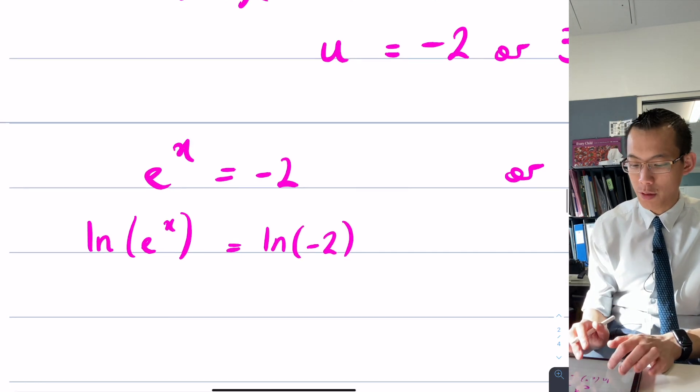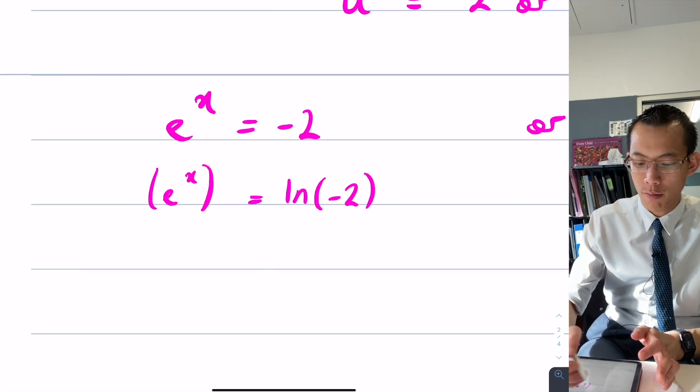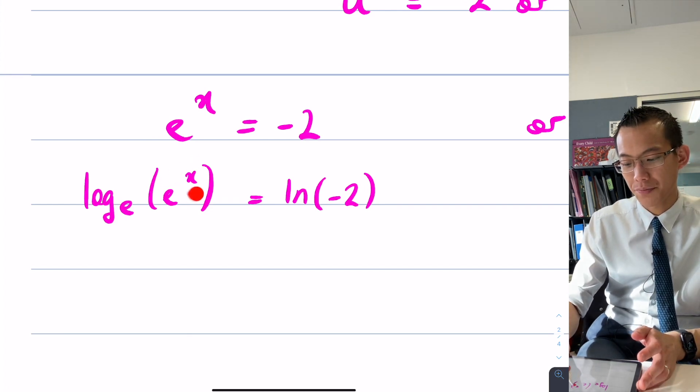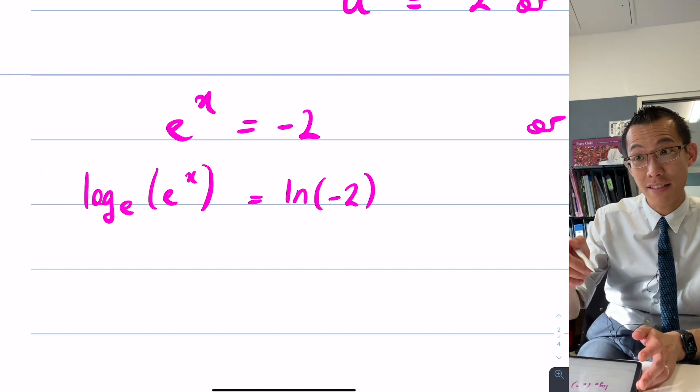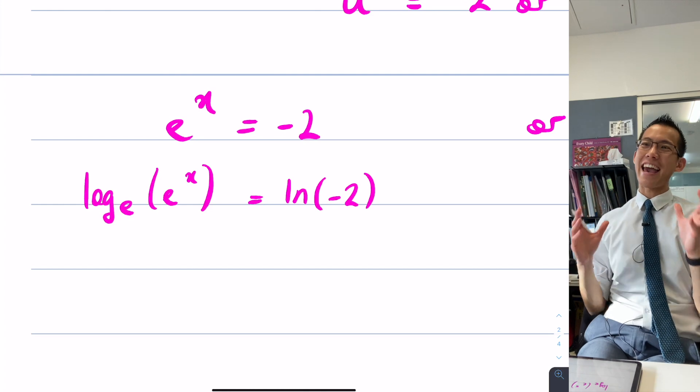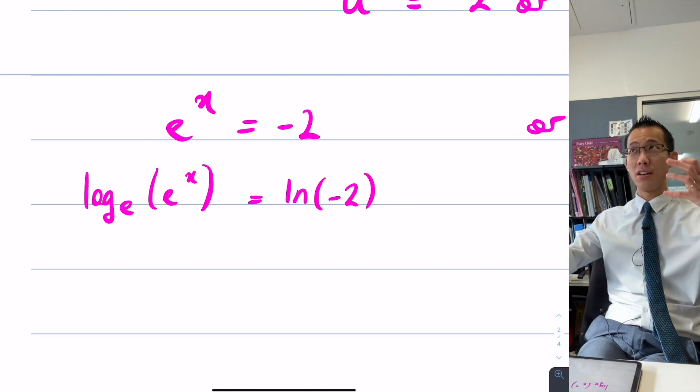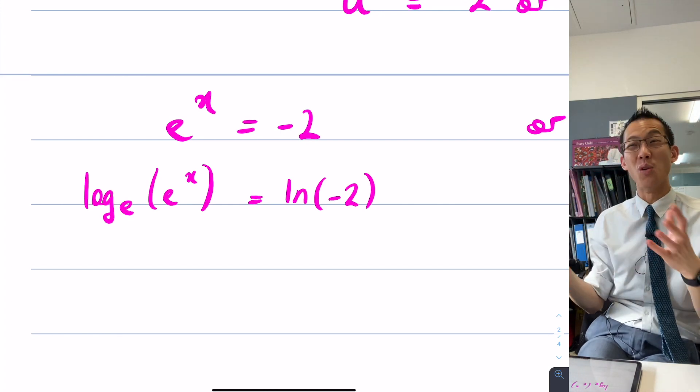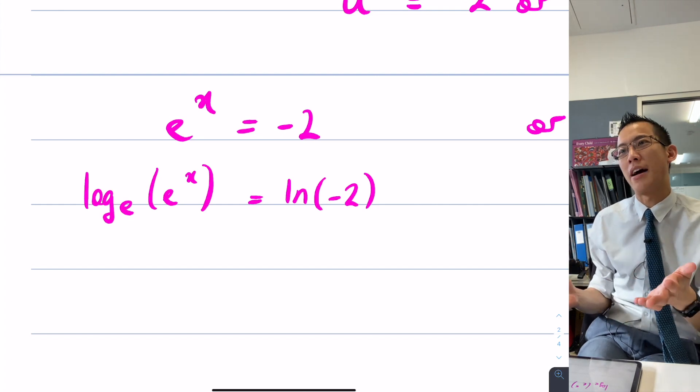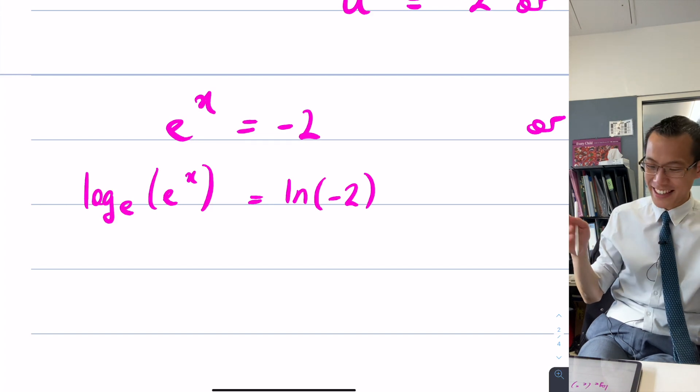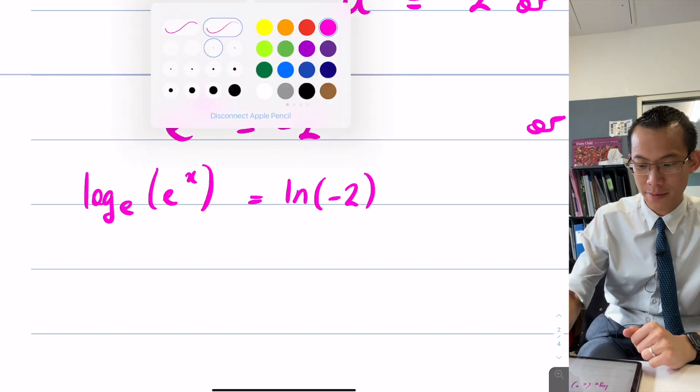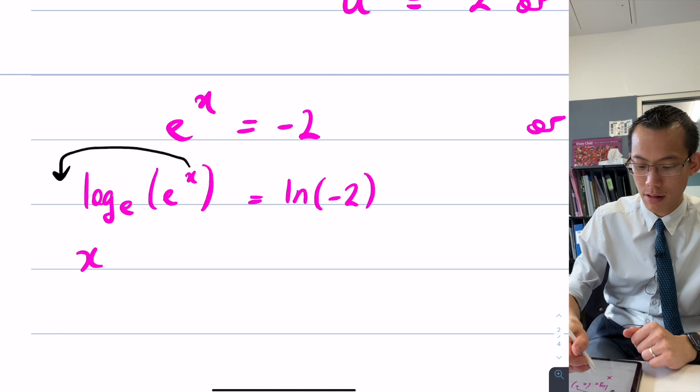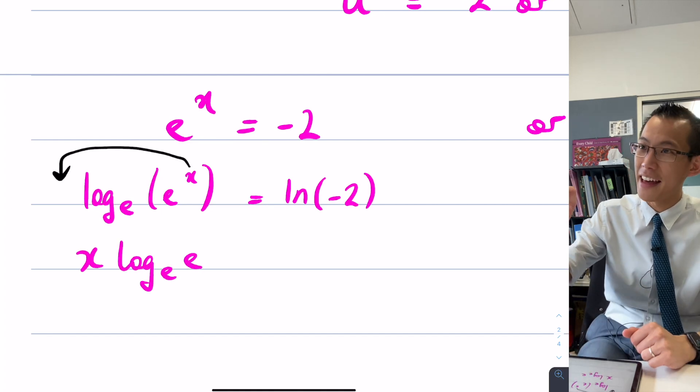Now the reason why this is useful is because, I should have probably actually written it in long form, log base e, because I want you to remember your log laws. See this x here? It can actually come out the front. Does that ring a bell? It's been a while since you've done this. Can you see how so much of what you're learning now, it combines and recaptures all these things you've learned in the past, but says now I need you to master all at the same time. It's like riding a bike. You've got to have balance. It's like you've got to master all these skills. So I'm going to do what I just said. I'm going to bring this x up the front, like so. So it becomes x log base e of e, and that's just one.